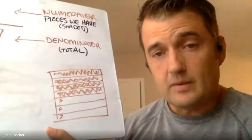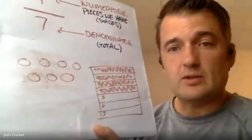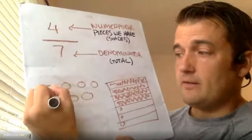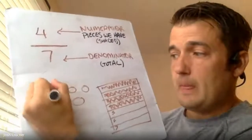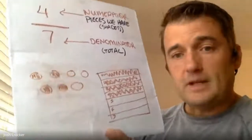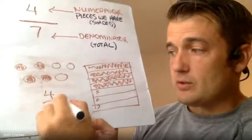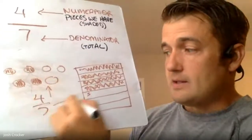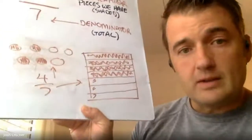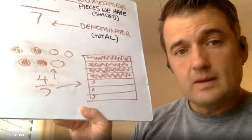Three of them are missing. I could also show this as a set. That's seven circles. If I color in four of them, that's four-sevenths. Both of these pictures are ways to draw four-sevenths.